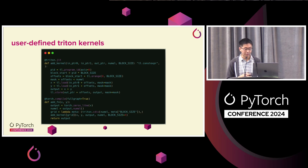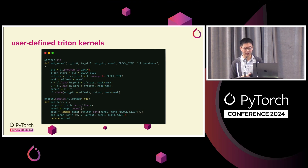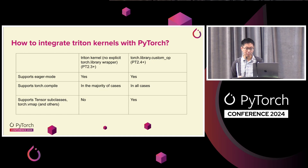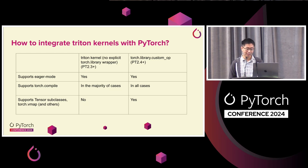The last thing I want to talk about is user-defined Triton kernels. You can write a Triton kernel — there's an add kernel example on screen from the Triton tutorial — and it will just work with Torch.compile out of the box. There's no reason to wrap a user-defined Triton kernel in a custom operator. Triton kernels work in eager mode and support Torch.compile in most cases, though there are some cases where they don't. They do not compose with Autograd or tensor subclasses by default, but if you do want full composition, you can wrap a custom operator on top of the Triton kernel.